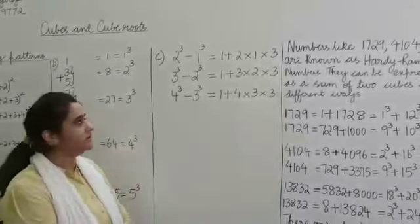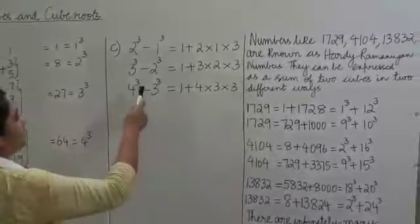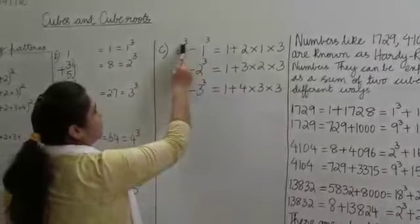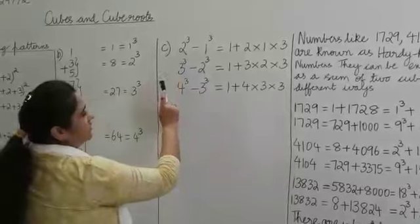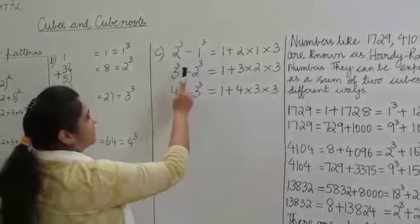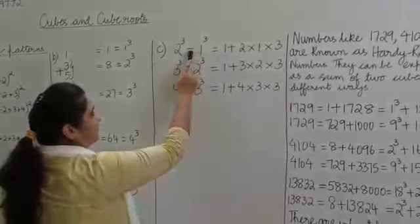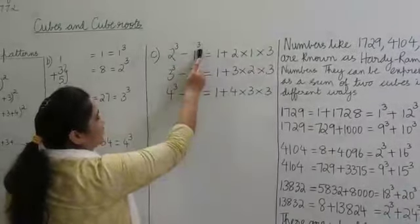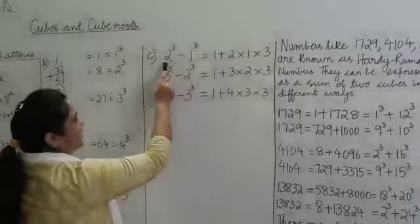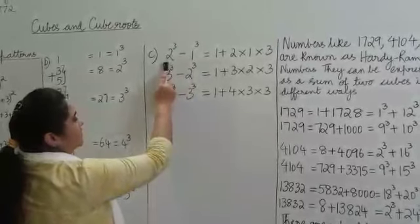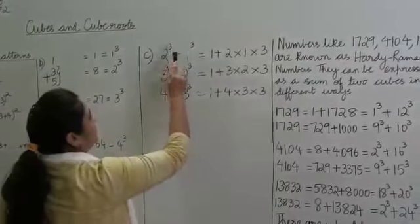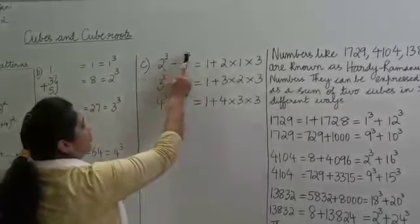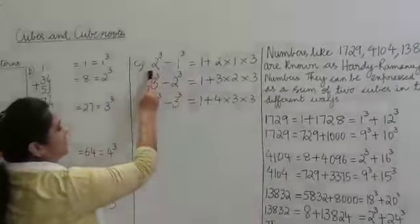Let's understand another pattern. Here we see the difference between the cubes of two consecutive natural numbers. 1 and 2 are two consecutive natural numbers. So what we have here is 2 cubed minus 1 cubed — the difference between the cubes of two consecutive natural numbers.